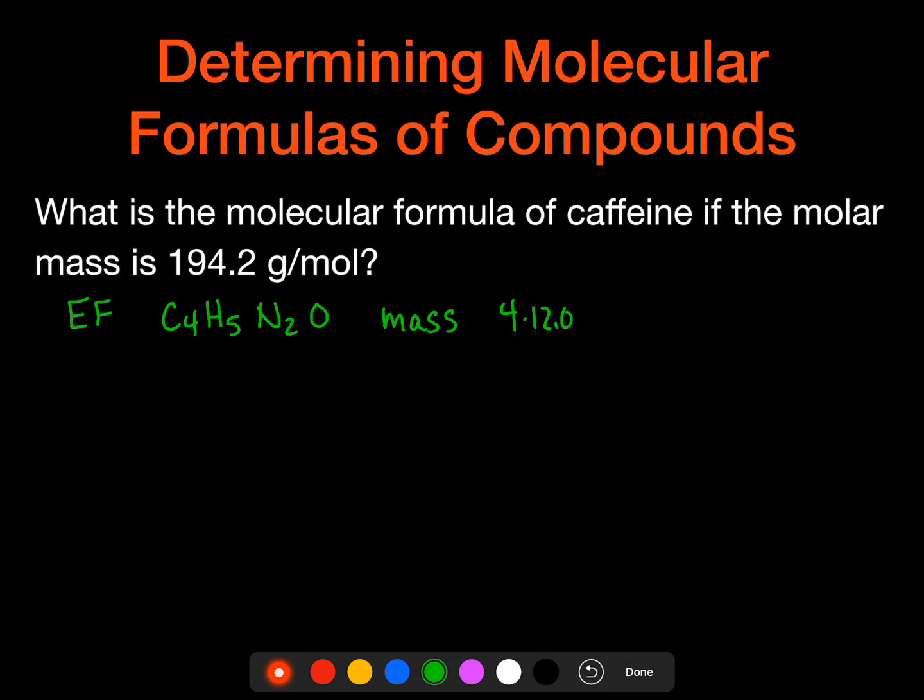So we're going to find the mass of this. So 4 times 12.01 plus 5 times 1.008 plus 2 times 14.01 plus 16.00. And so the mass for that is going to be 97.1. That's our empirical formula mass. So if you were given all of the data from the last one in conjunction with this and asked for the molecular formula, then you would do what we did to determine empirical formula first and then to find the molecular formula.